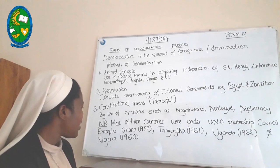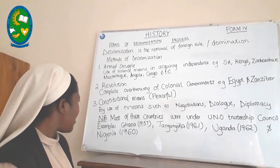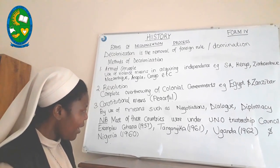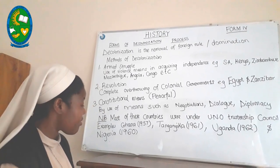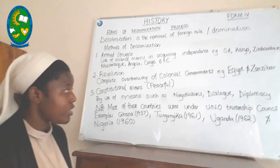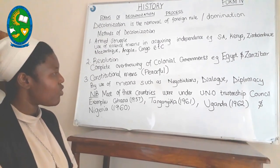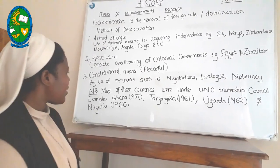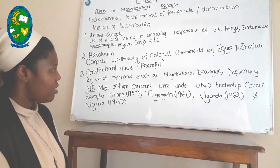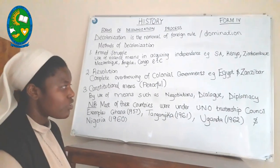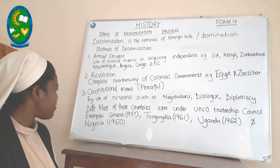Something to note is that some of these countries were also under the United Nations Trusteeship Council. For instance, Tanganyika was earlier under German colonial rule, but after the Second World War, Germany was defeated and lost her colonies in Africa, including Tanganyika. These colonies then came under the UN Trusteeship Council, and the United Nations had to ensure that these mandated territories were prepared for independence.